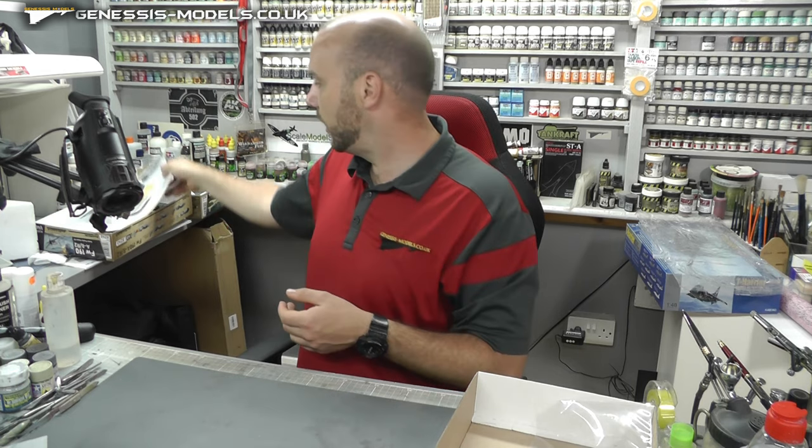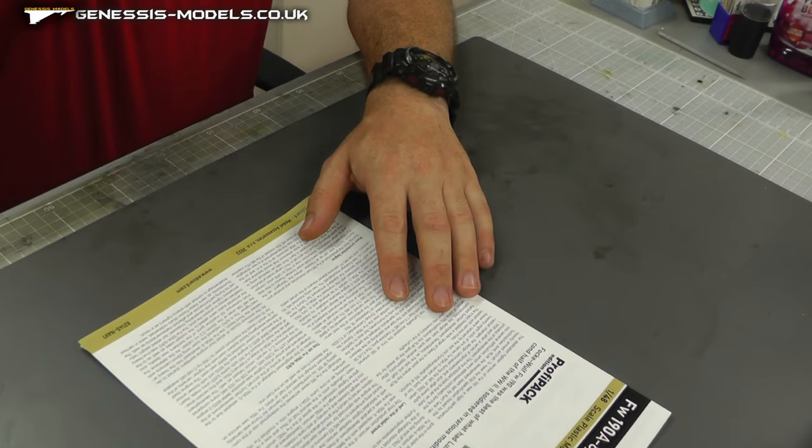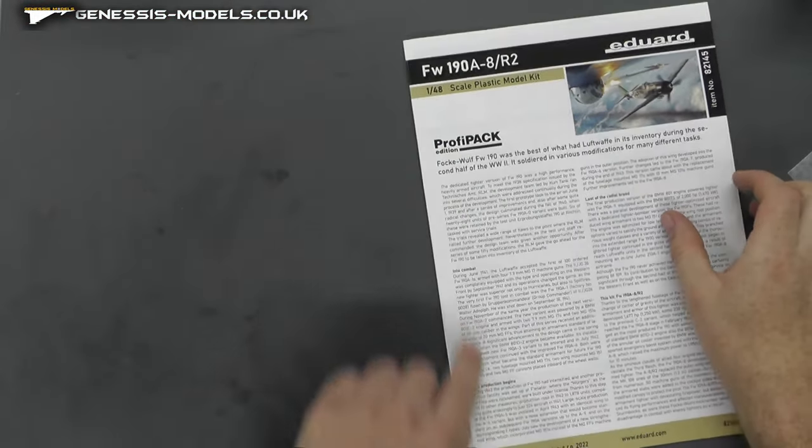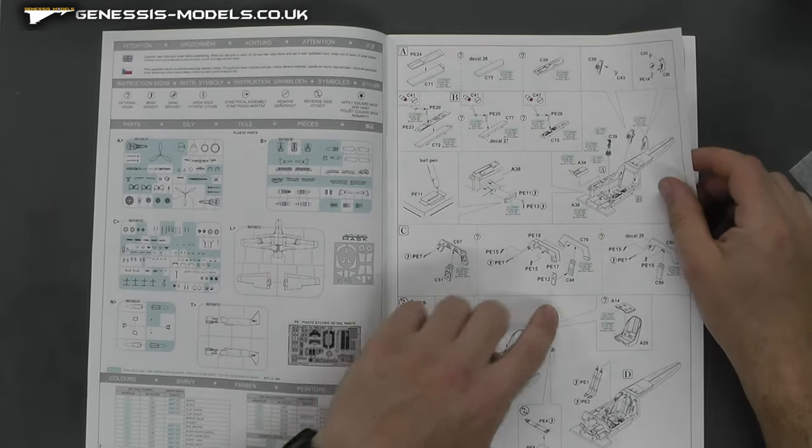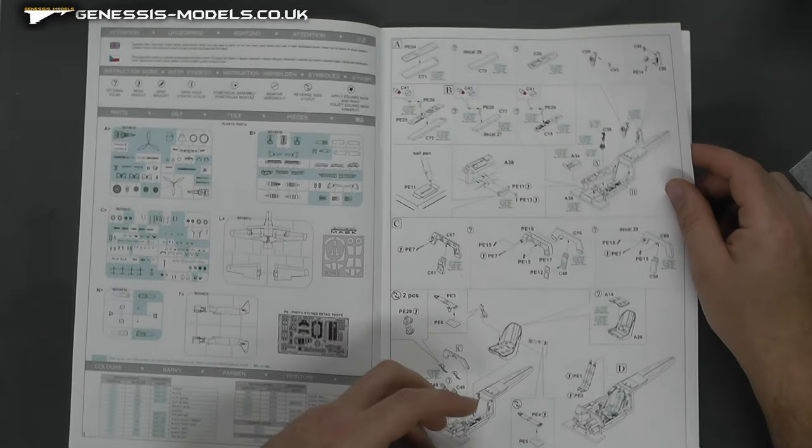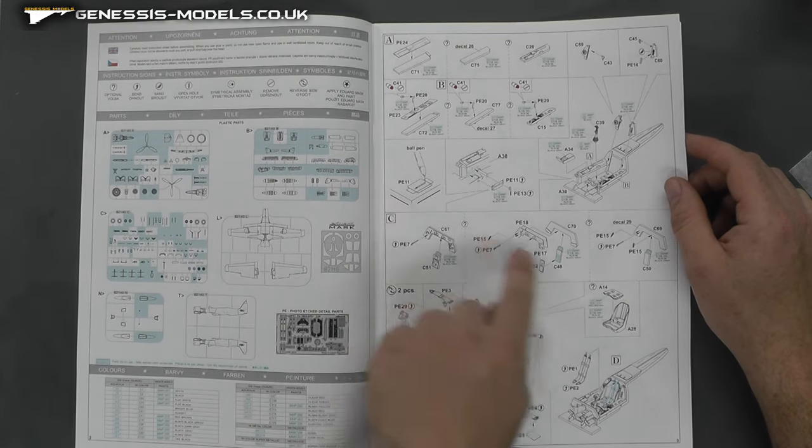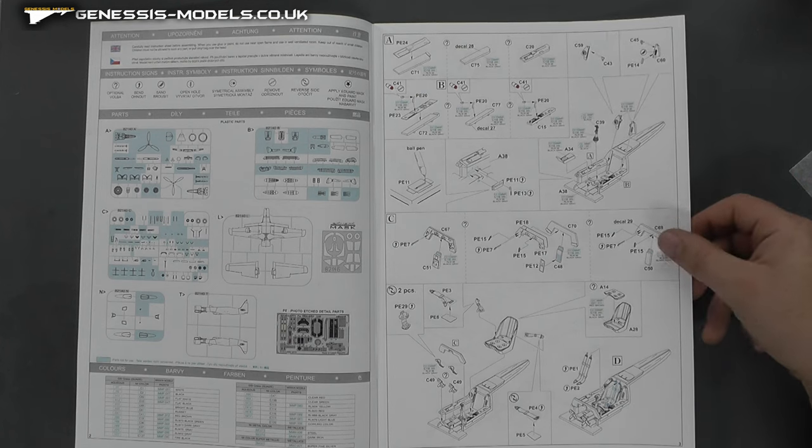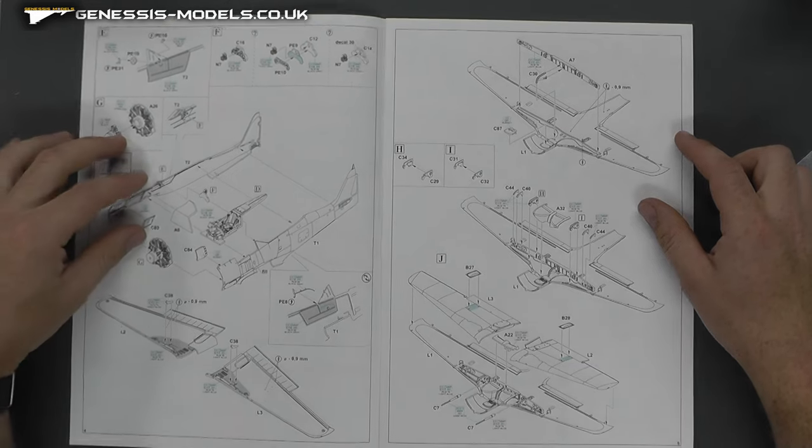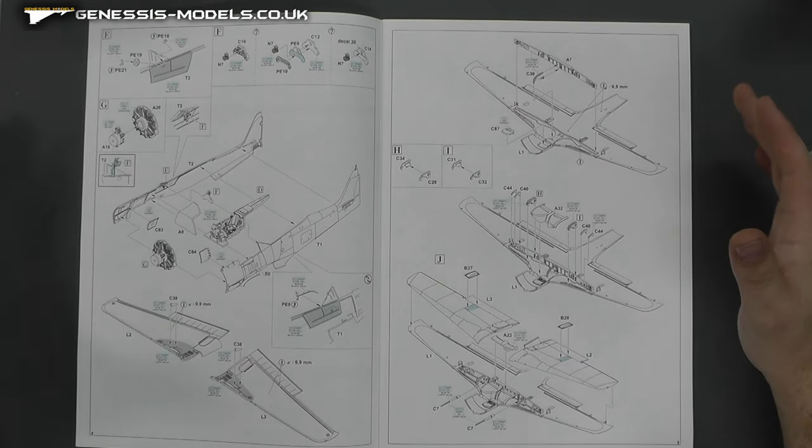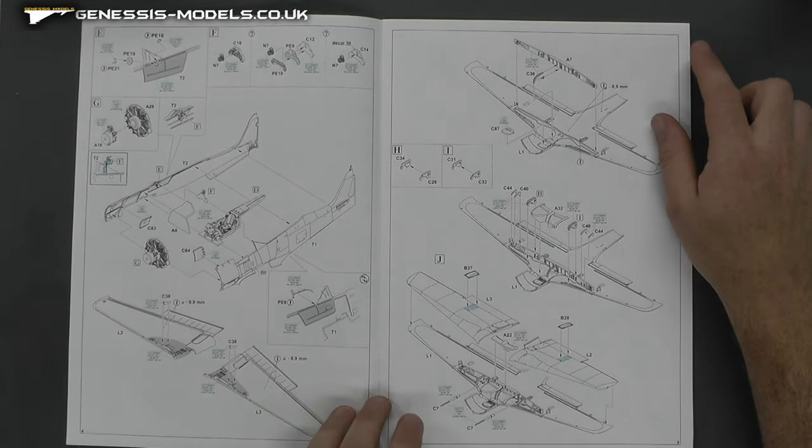A quick look now at the instructions. We do get this nice high-quality paper for the Profi-Pack Edition. Nice description about the actual aircraft itself. The instructions are good old Eduard. We've got a nice bit of color to help explain things a little bit better. It's showing you where all the photo etch goes, where everything goes. It does seem to guide you and show you quite nicely where everything's going. Looks like you're going to have no problems putting the cockpit together.